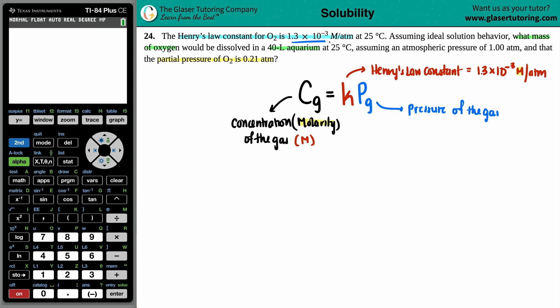Now let's see. They said the Henry's Law constant was 1.3 times 10 to the negative third. We're using that formula here. Now they're asking for what is the mass of the oxygen that would be dissolved in 40 liters. And they said that we have an atmospheric pressure of 1 atm and then we have a partial pressure of O2 as 0.21. Now I have two pressure values. What is going to be the P value that I use? Keep in mind that it has to be of the specific gas, not the total.